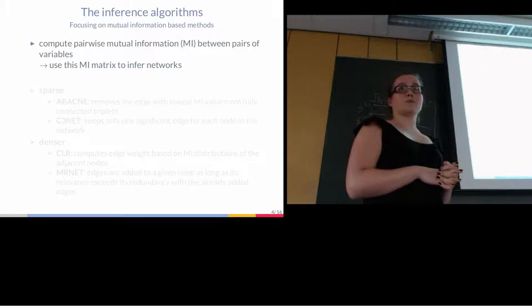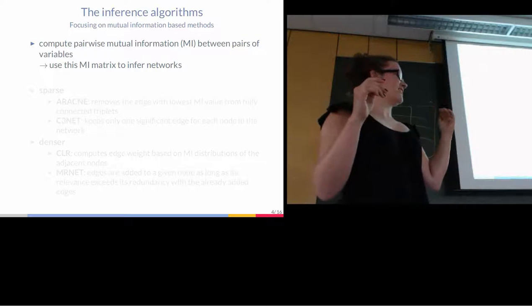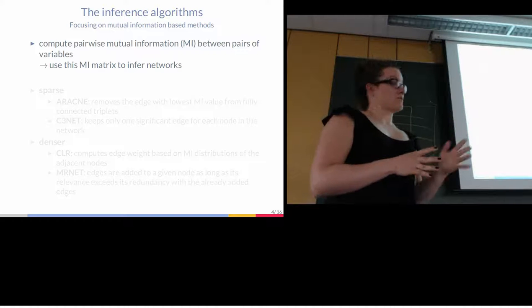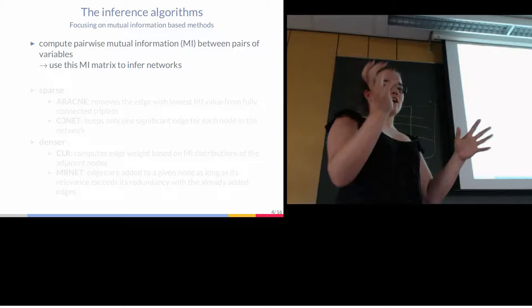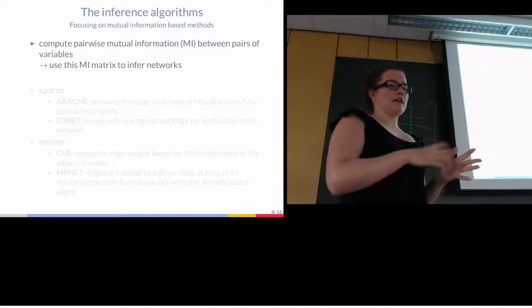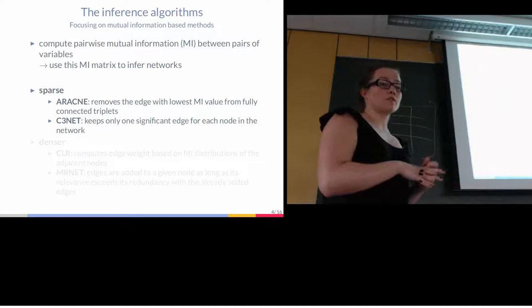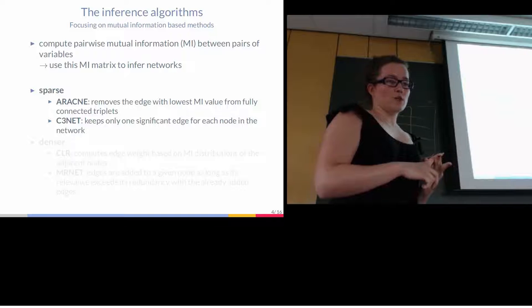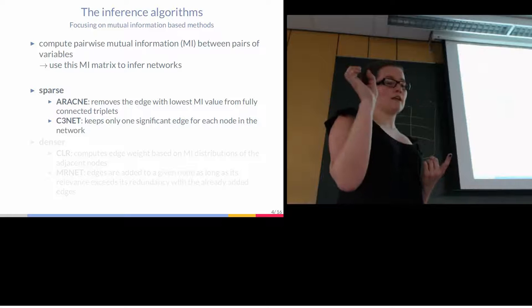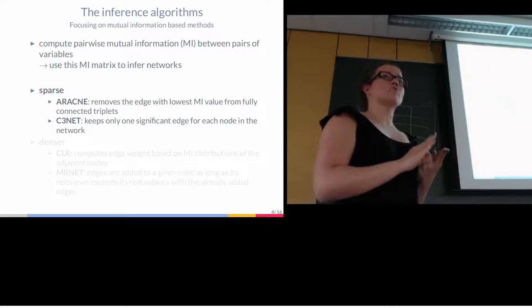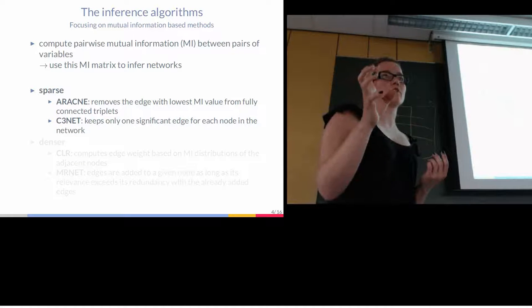Then we looked at the network inference algorithm. As you saw in Patrick's slide with all the results compared in the netbenchmark package, there's a huge number of algorithms. For this study I focused on those using mutual information. As Patrick already explained how it works, you compute the pairwise mutual information and then start with this as input to the different algorithms. There are those algorithms that infer sparse networks, ARACNI and C3NET. For the first one, you remove the least significant edge in each triplet of variables. For C3NET, you keep only the most relevant edge per variable. So for C3NET, your number of edges is actually limited by the number of variables in your dataset.